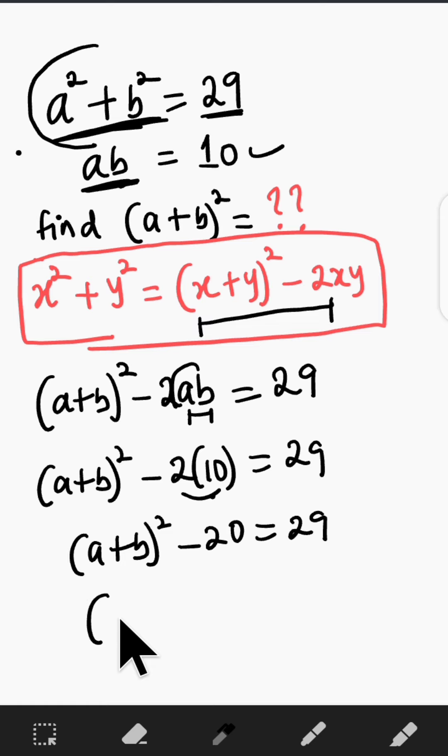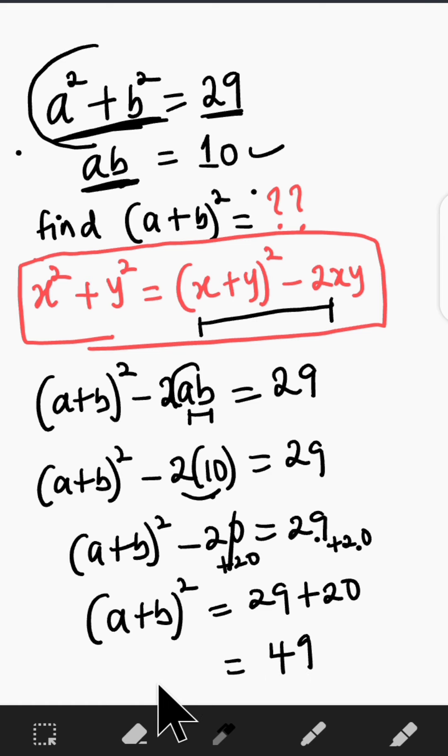Finally, a plus b all squared is now equal to 29 plus 20. When we add 20 to both sides of the equation, this cancels out, so we have 29 plus 20. And 29 plus 20 is exactly 49. So a plus b all squared is exactly 49.